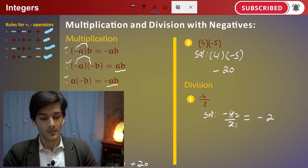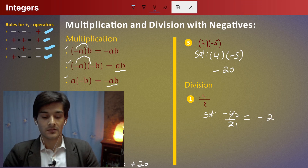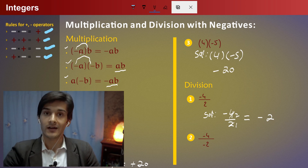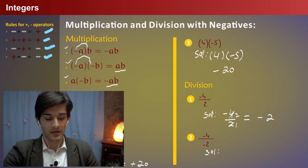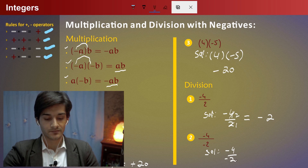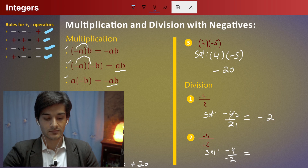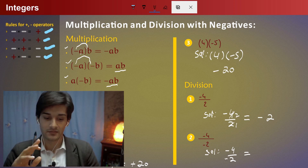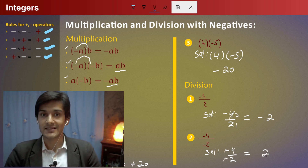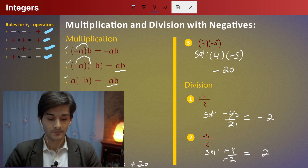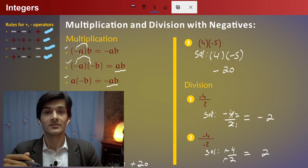The next example is minus four divided by minus two. Solution: minus four divided by minus two. Minus and minus gives a positive result, so four divided by two is equal to two. That covers multiplication and division with negatives, and we have explained the explanation for this.